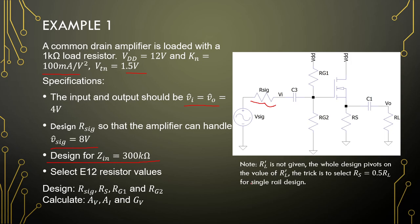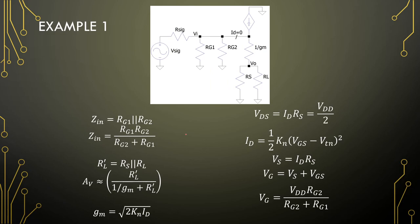For single-rail applications, you choose RS to be half the value of the load resistor — then your amplifier will be able to drive this load without too many issues. Looking at the small signal: looking into the amplifier we see 1/GM, and looking in from the input side we see RG1 parallel to RG2.